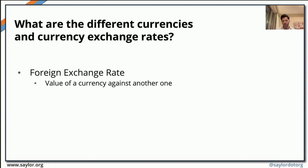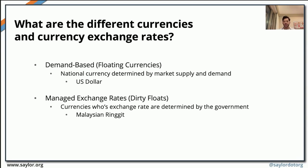Having discussed the monetary standards and terms like pegged currency and free-floating currency, let's look at foreign exchange rates — the value of a particular currency when measured against another, such as the US dollar against the Mexican peso. If we're talking about free-floating currencies, we have demand-based exchange rates, where the currency's value is determined by supply and demand in the market. An example of a free-floating currency is the US dollar.